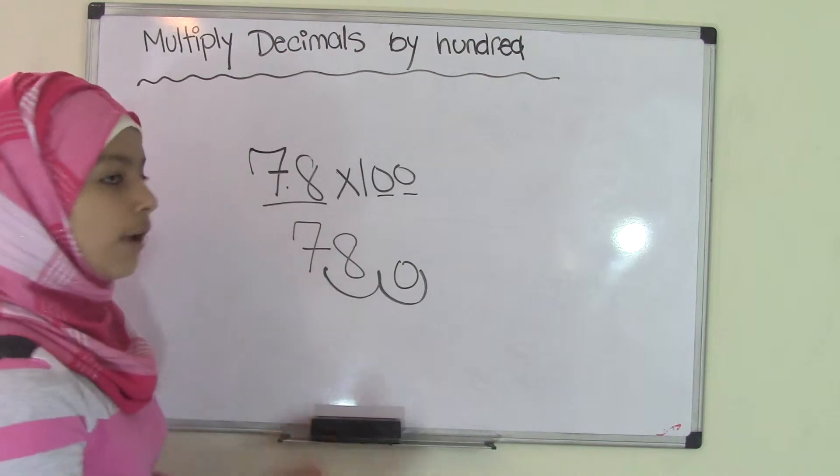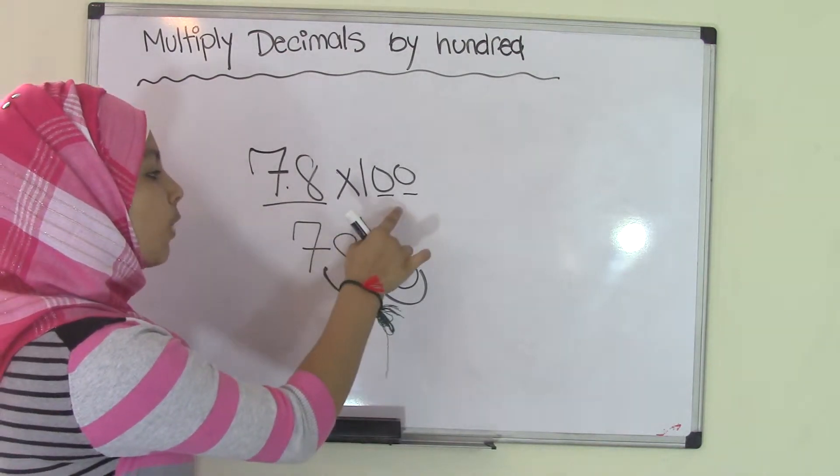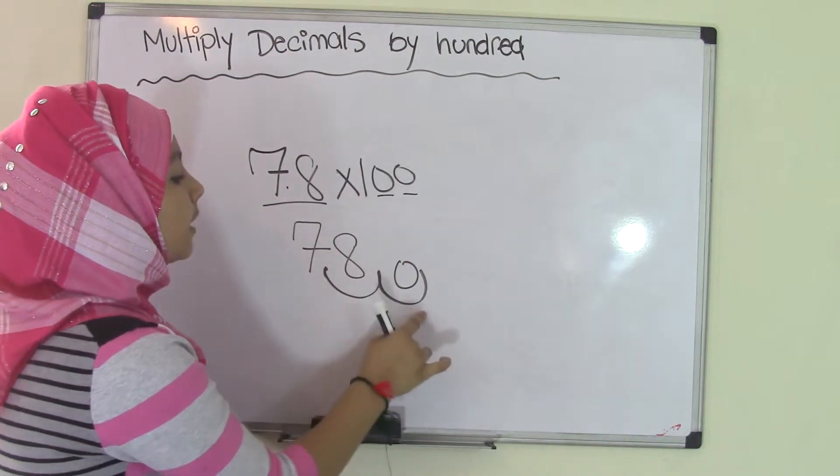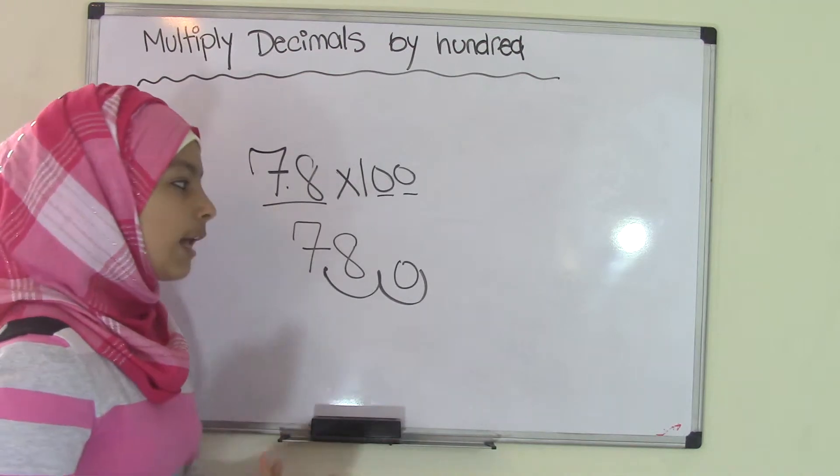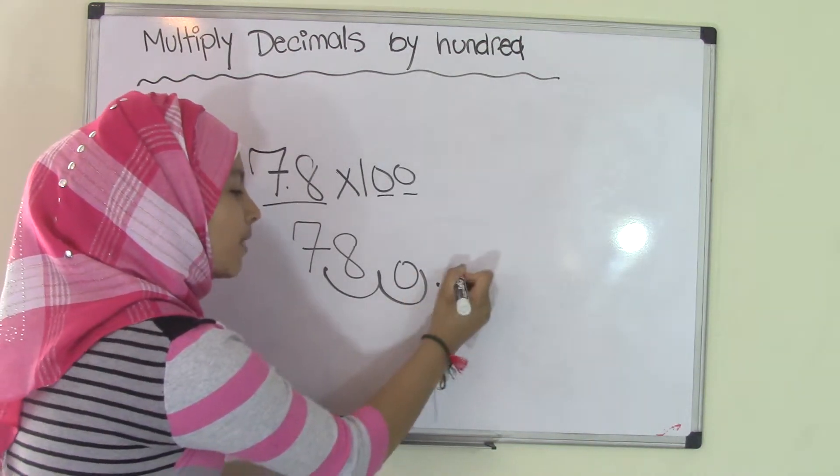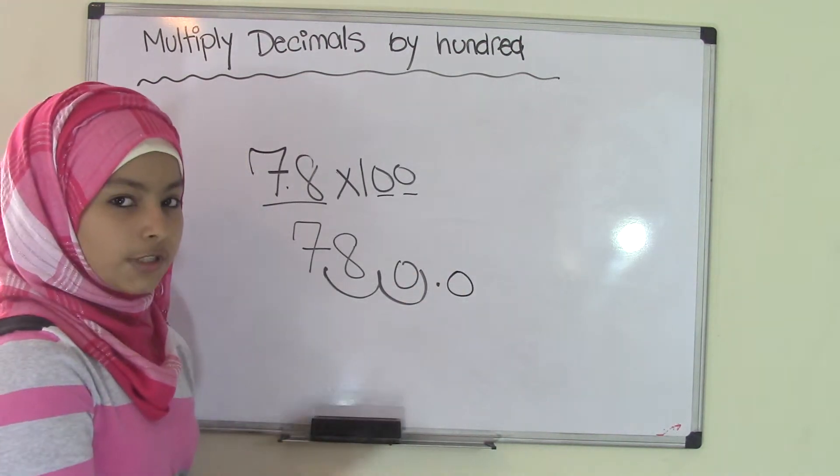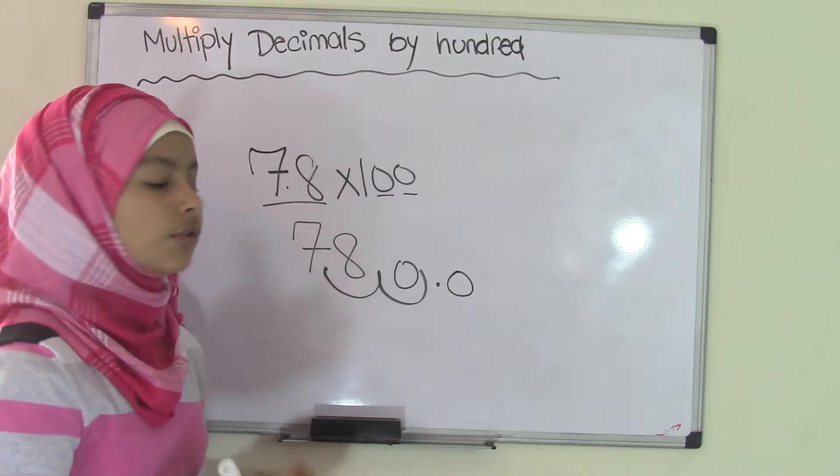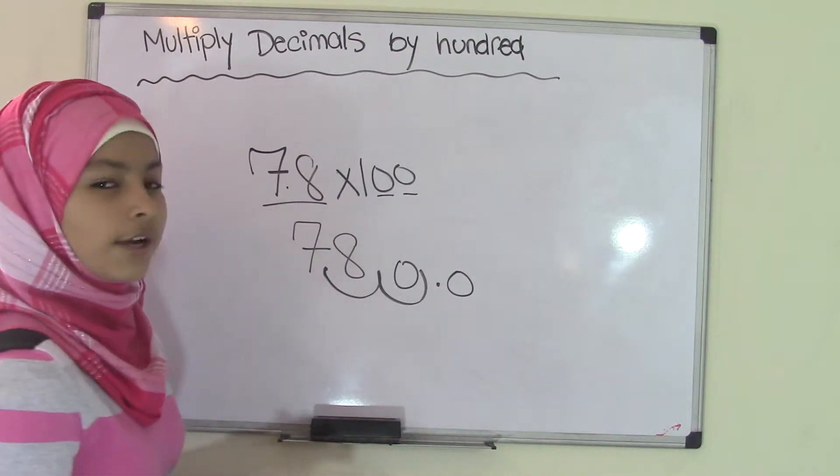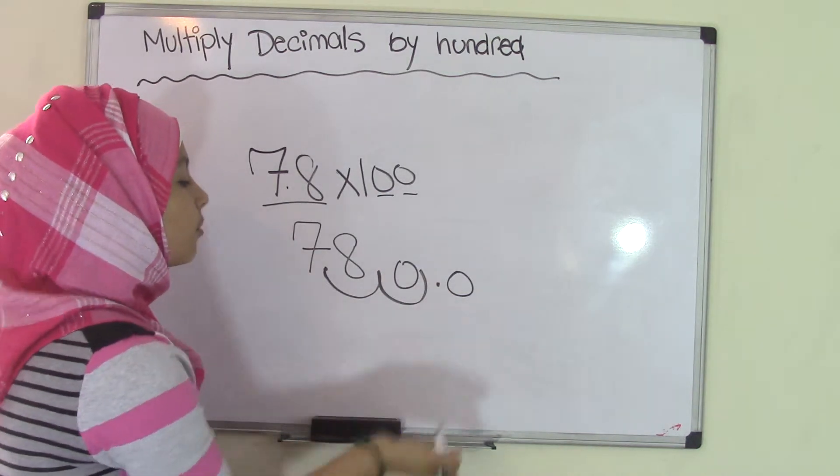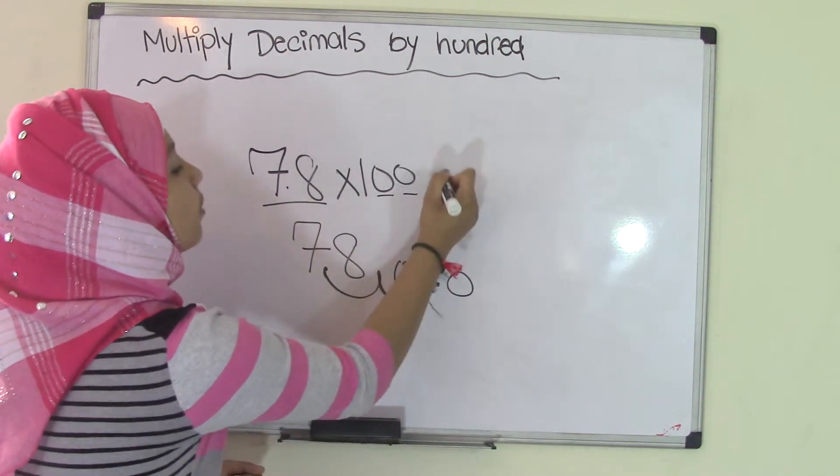So that means the product of 7.8 times 100 is 780. Now if you want to add a point zero here it doesn't really make any difference because the point zero stands for nothing, the value is zero. So it's not important or necessary to add the point zero, so you could just say 7.8 times 100 equals 780. So that's the product.